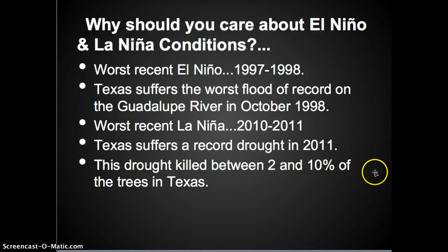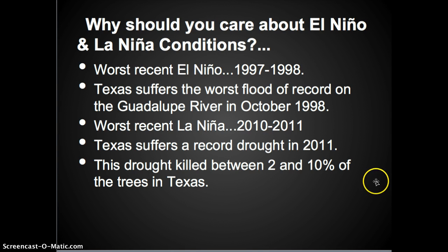So why should you care about El Niño and La Niña conditions? Our worst recent El Niño was from 1997 to 1998. During this time, Texas suffered the worst flood on record — the flood of '98. The worst recent La Niña was from 2010 to 2011. During this time, Texas suffered a record drought in 2011. This drought killed nearly 2 to 10% of the trees in Texas.